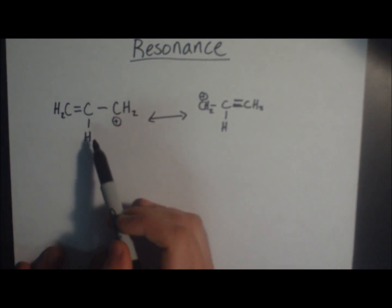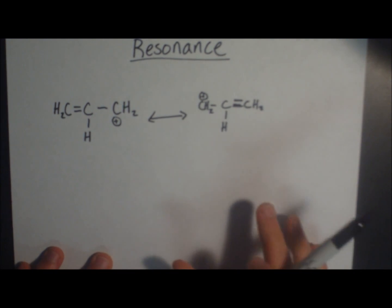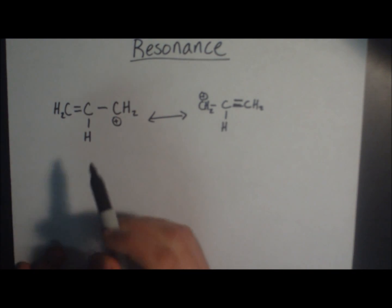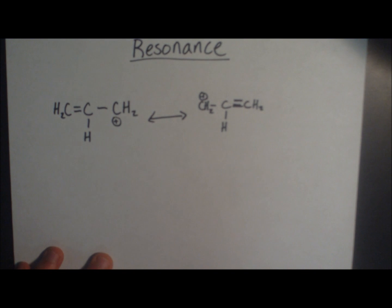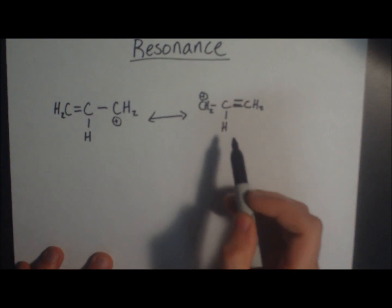The carbon skeleton and the hydrogens are all in the same place. However, only electrons differ between these two structures. So if this is the case, you can draw a resonance hybrid.